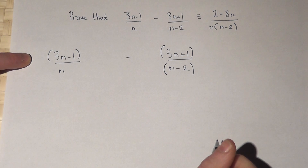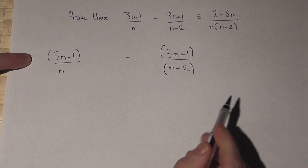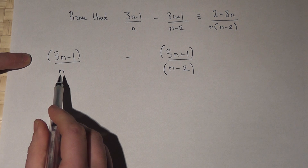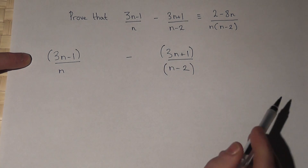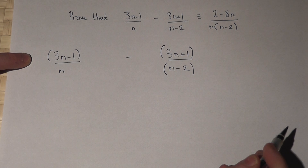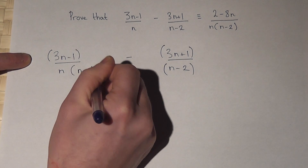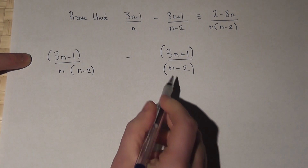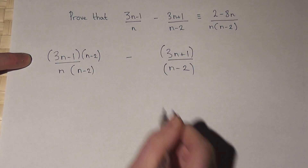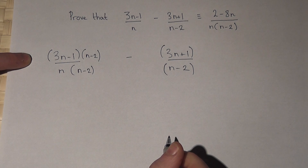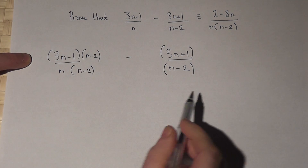Now to subtract our fractions I need the same denominator. This has got an n, this has got a bracket n minus 2. So I times the top and bottom of the first fraction by n minus 2. I then times the top and bottom of this fraction by the n.